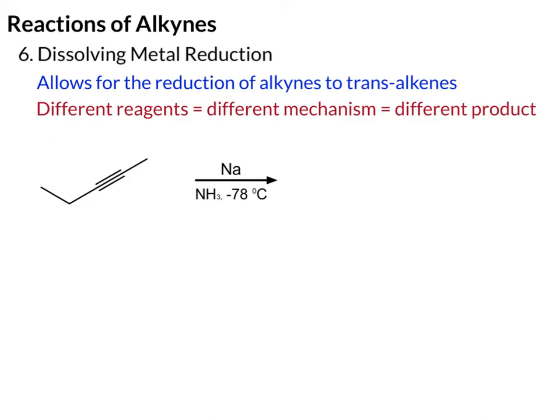Lindlar's catalyst is useful to get a cis-alkene, but what if we want a trans-alkene? For that we can use what's known as a dissolving metal reduction. What this does is it allows for the reduction of alkynes to trans-alkenes. We're using different reagents, and that will result in a different mechanism and therefore a different product.